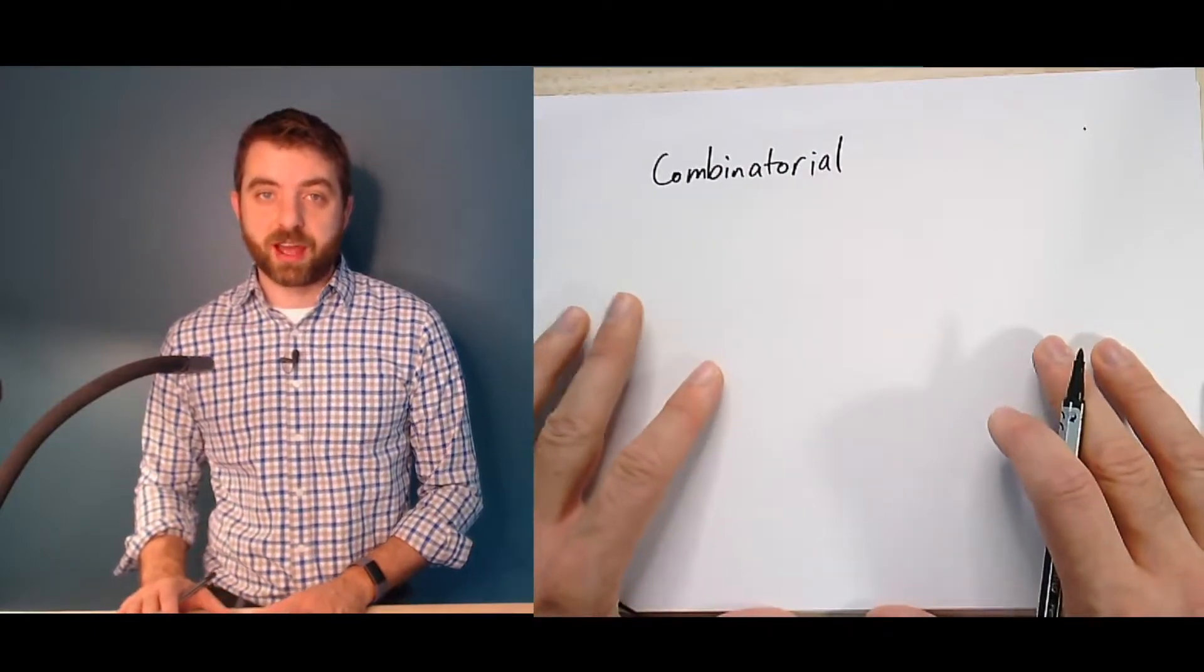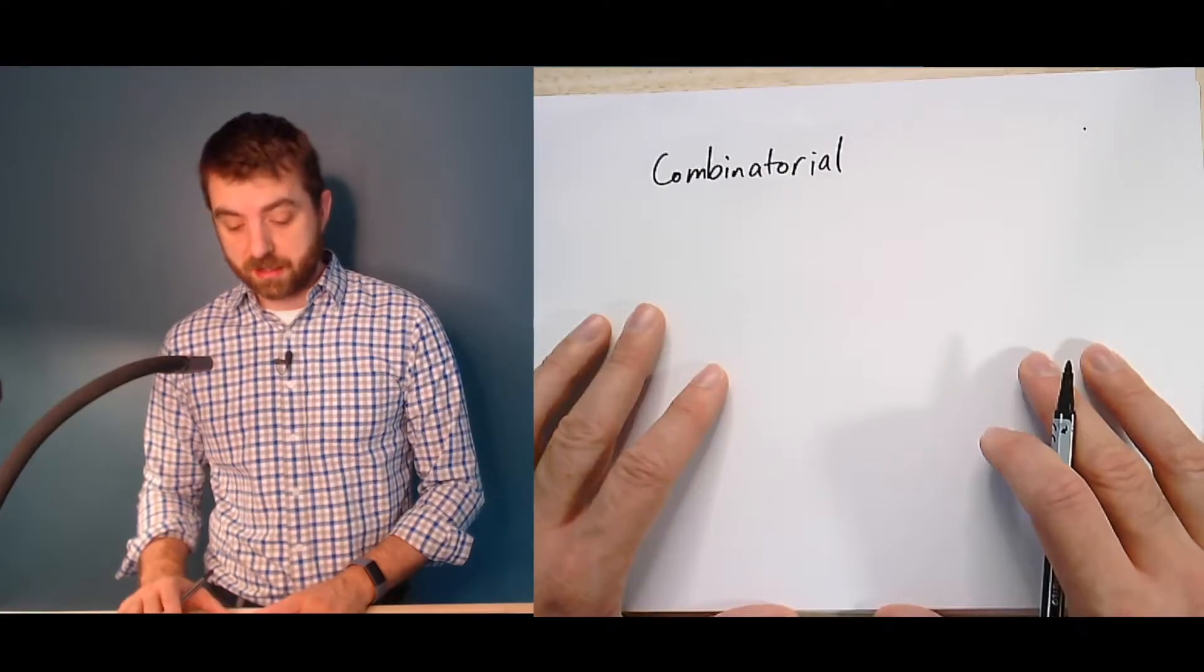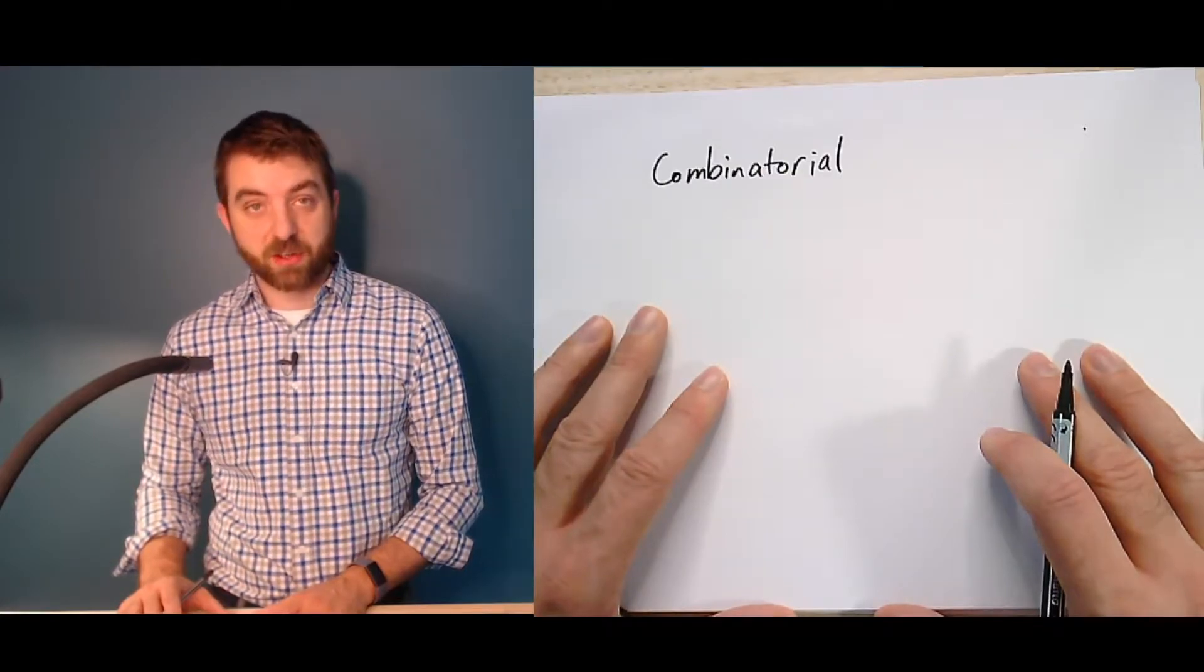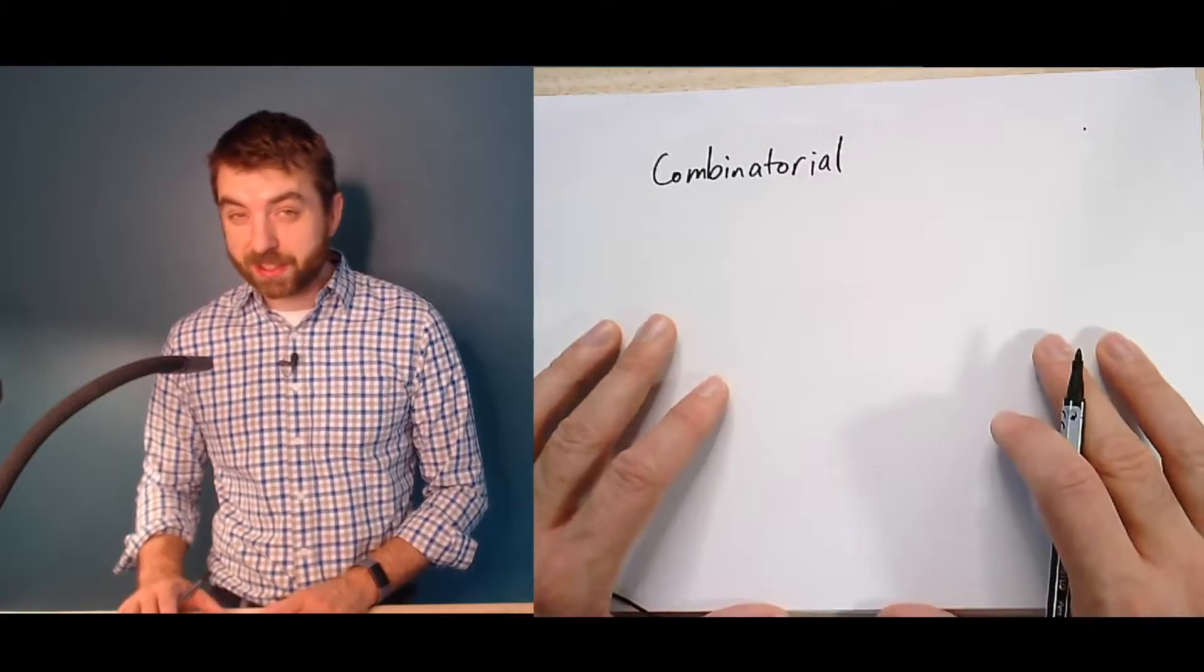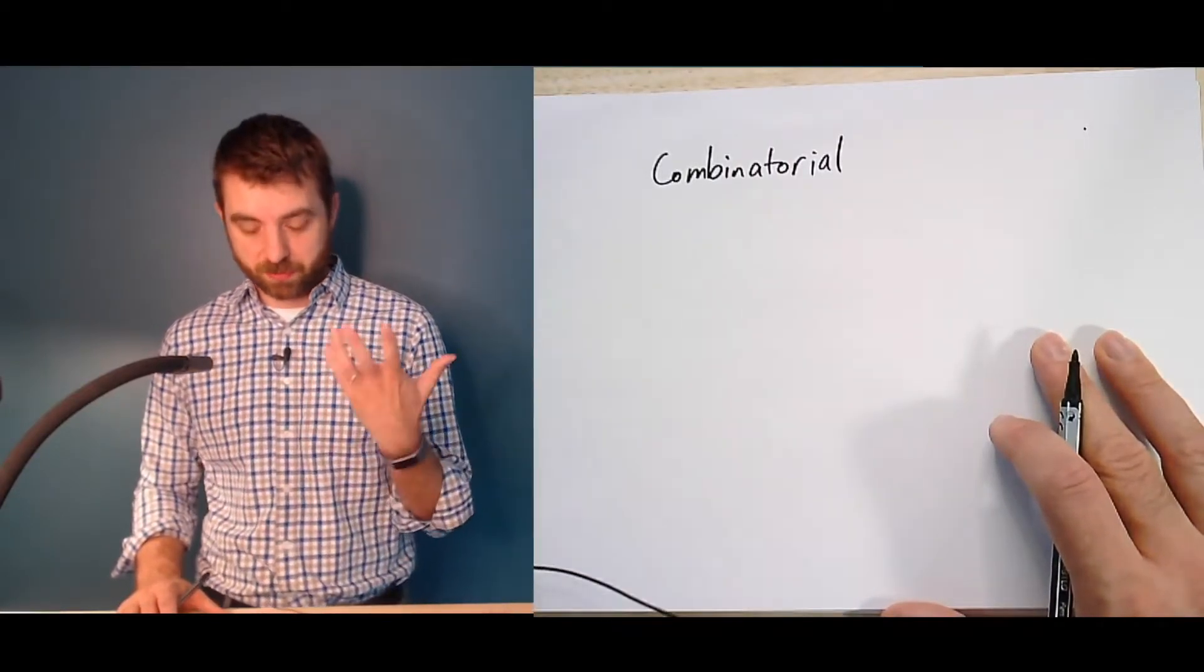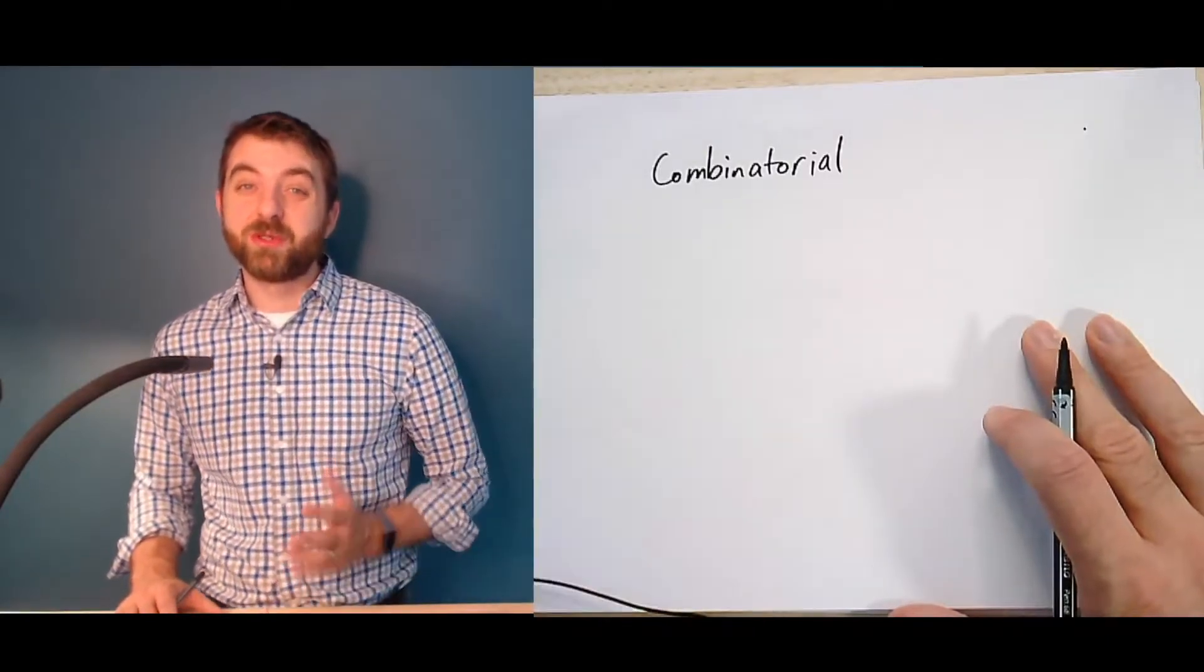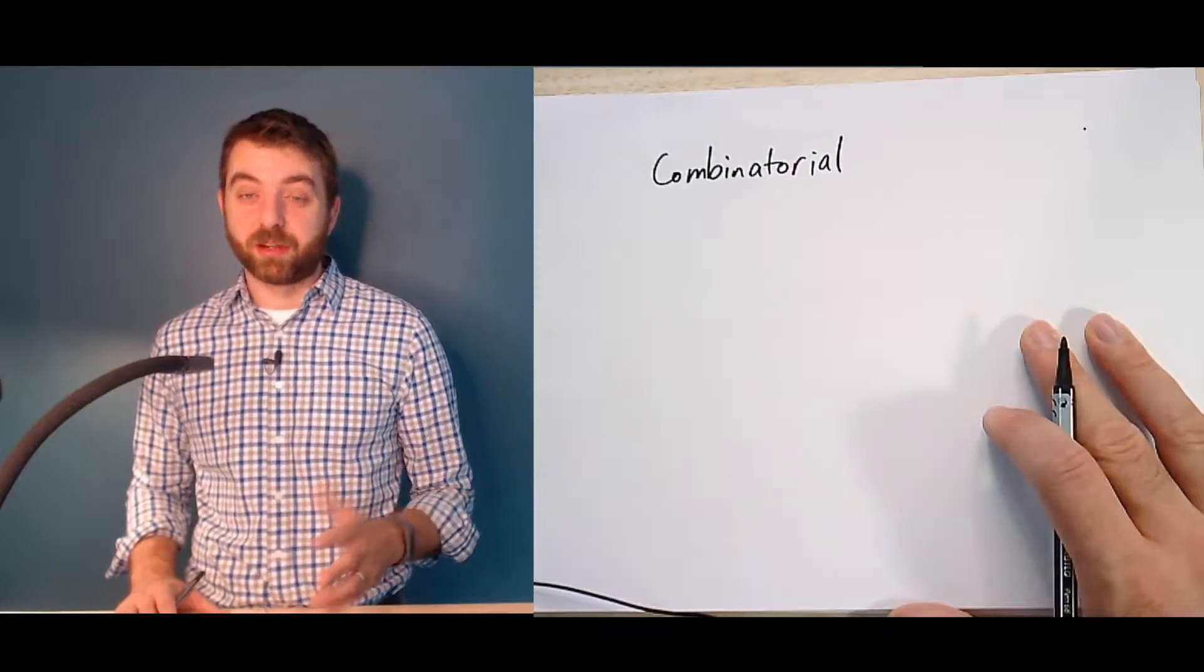It's thinking about the graph as a system of sets. That is these things called vertices and these things called edges, which we'll talk about. But I'm going to expect that probably you've seen graphs and now you really want to learn them more deeply. So that first combinatorial perspective covers what would usually be considered the canon of graph theory.